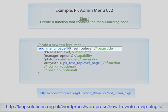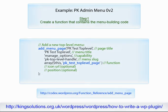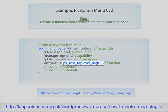The function add_menu_page specifically creates a new top level menu section in the dashboard's admin menu sidebar. We will use this function to add the top level menu PK test top level to the dashboard's admin menu structure, and call the PK_test_top_level_page function to display the related options page.